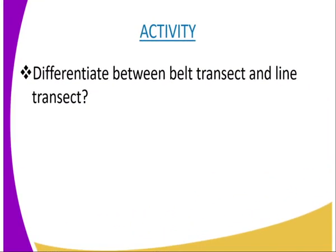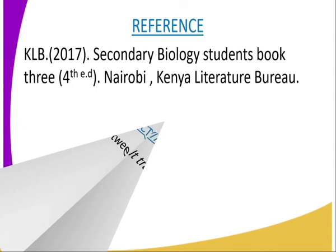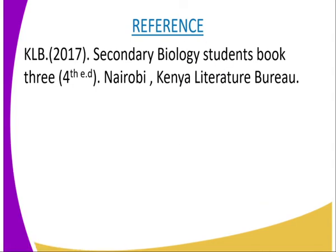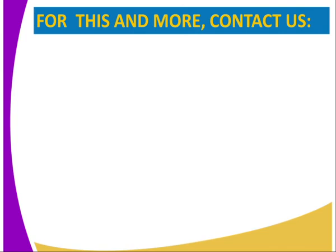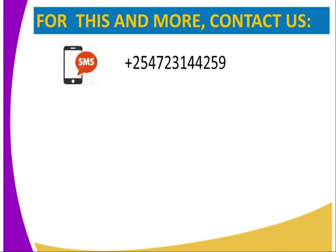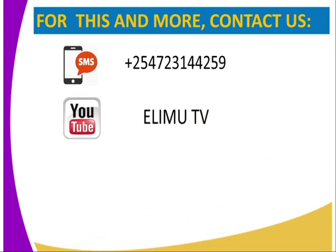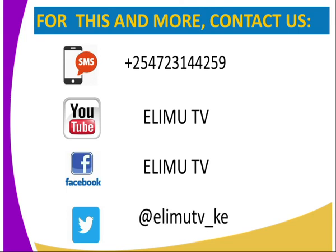Having said that, your activity is to differentiate between belt transect and line transect. For this lesson, you can refer to KLB Secondary Biology Students Book 3, fourth edition, Nairobi, Kenya Literature Bureau. To get this lesson and many more biology lessons, you can send us an SMS through the number on our screen, subscribe to our YouTube channel Elimu TV, send us a message on our Facebook page Elimu TV, or tweet us at Elimu TV underscore Kenya. Subscribe to all these channels and enjoy many more biology lessons. Thank you.